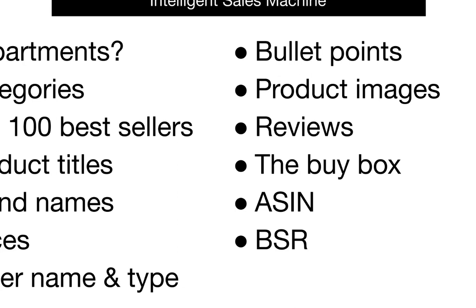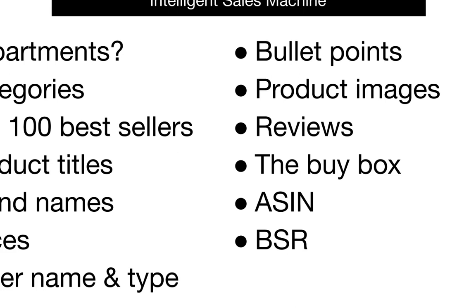The deeper we research, the more hidden gems we'll find. When we find a listing that we're interested in within a product category, you're going to learn how to find product titles as well as how to identify the brand name. We'll then look at the retail and sales price, find the seller name and type, identify product bullet points, product images, product reviews, discuss the buy box, and find ASINs and BSRs. Don't worry if you don't know exactly what everything means right now — it'll all become very clear in a moment.